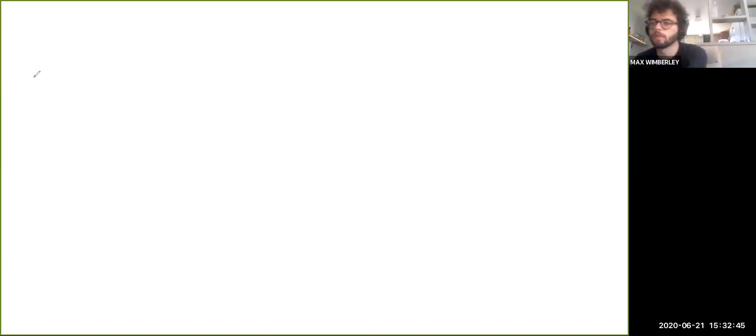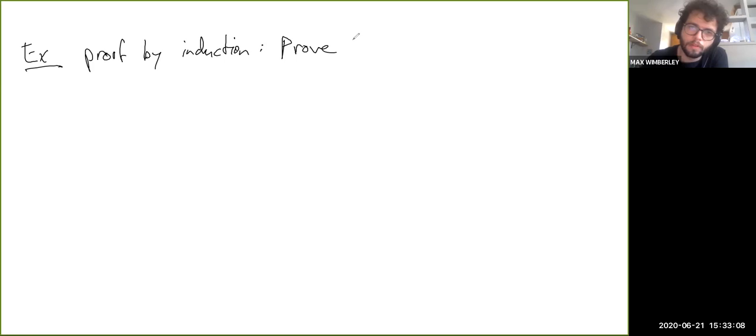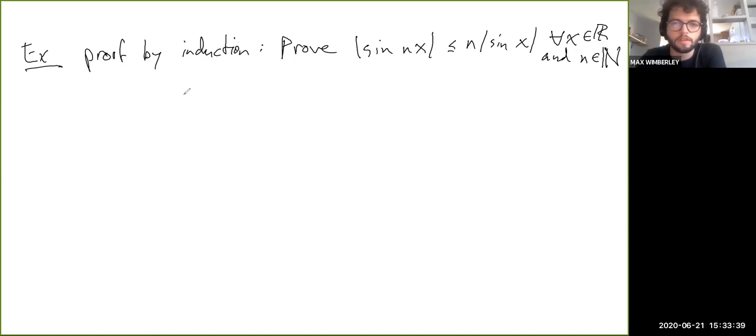So I want to give you an example, proof by induction. So we're going to prove, let's see, what is it, sine of nx is less than or equal to n sine of x for all real x and for all natural numbers n. So the first thing to do in a proof by induction, right, is to handle the base case. And the base case is when n equals one, at least in this case. I mean, obviously you can make proofs by induction with a different base case. And that's just like sort of, it's the same basic concept, but just slightly modified.